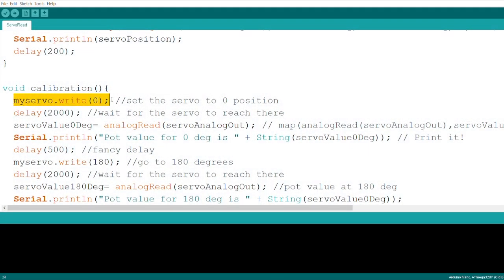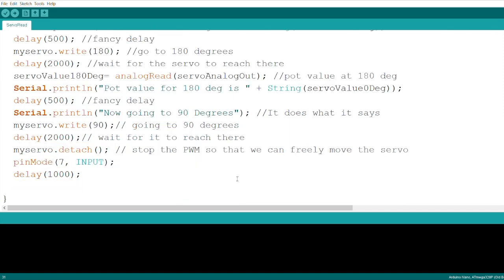The code first moves the servo to 0 and 180 degrees to find out what the extreme values of the potentiometer are, and then we call the detach function of the servo class to stop sending PWM signals so that the servo doesn't resist motion when we try to turn it.